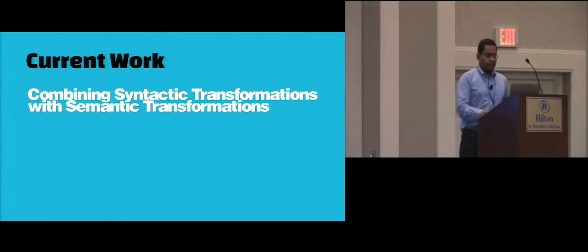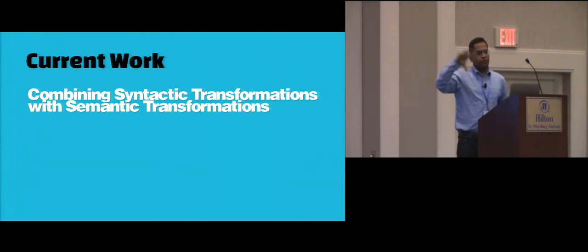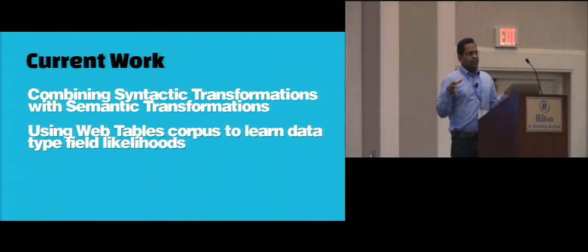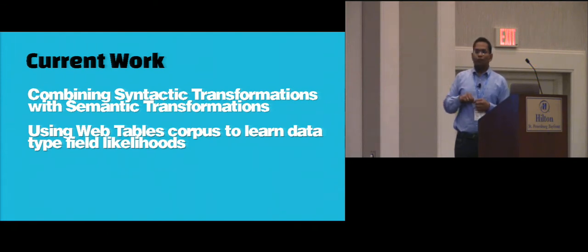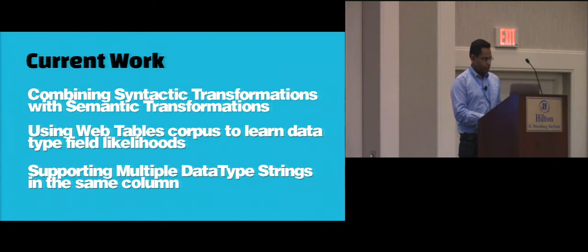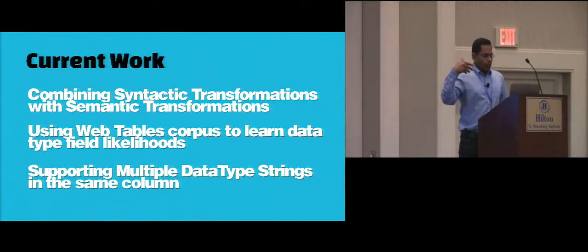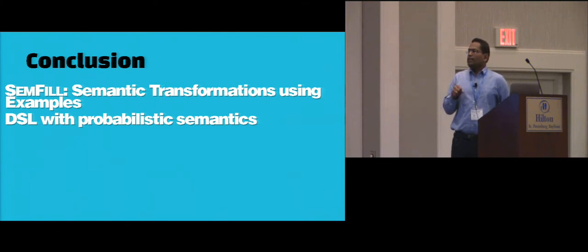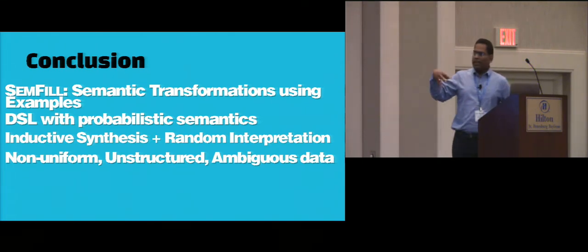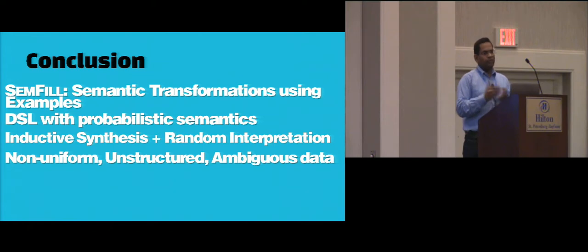In summary, we are extending this system to also support syntactic transformations like Flash Fill. Currently likelihood values are specified manually using declarative constraints, but we are now using millions of web tables scraped by the Excel team to learn these values from data. We are also extending it to support multiple data type strings per column. In conclusion, SemFill performs semantic transformations from examples using a DSL with probabilistic semantics, combining inductive synthesis with random interpretation to handle non-uniform, unstructured, and ambiguous data.